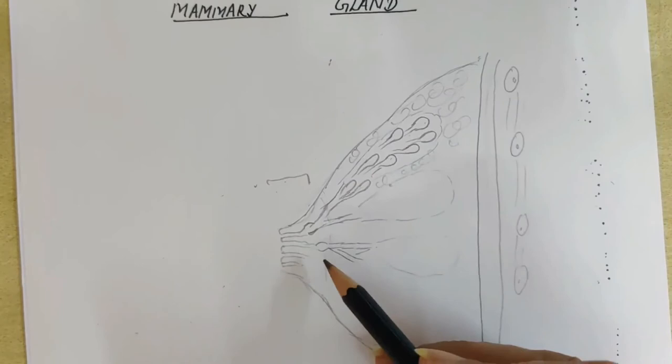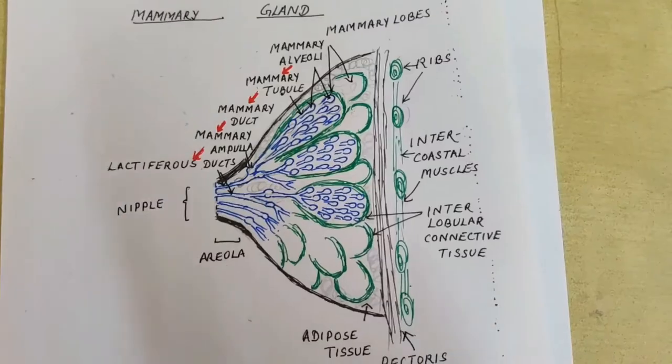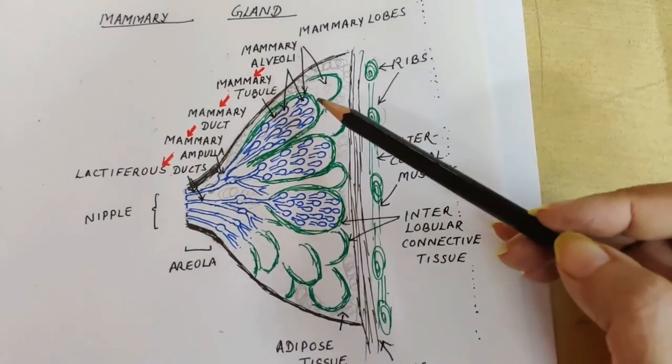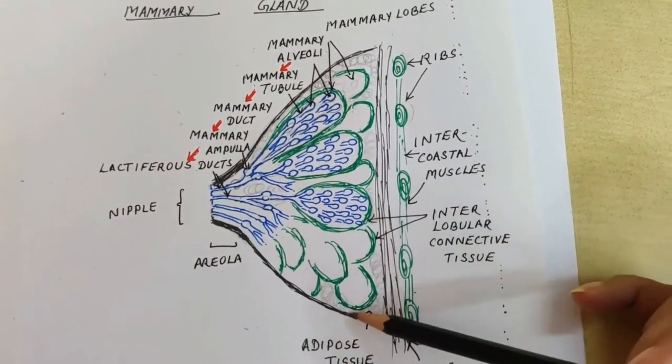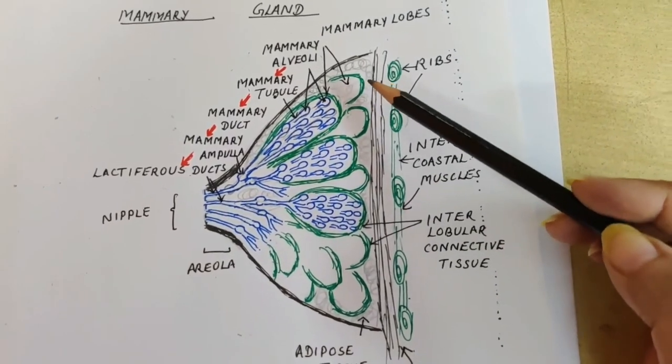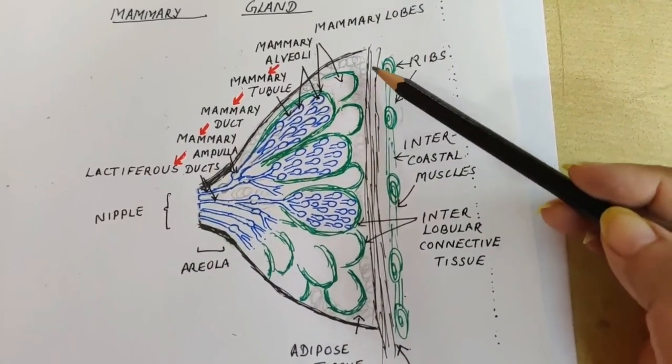open on the nipple. Now the labeling is complete. The mammary gland, which is a modified sweat gland in human females,